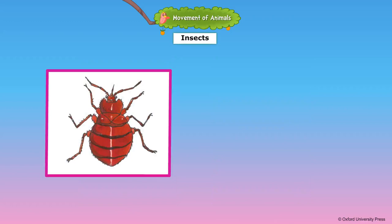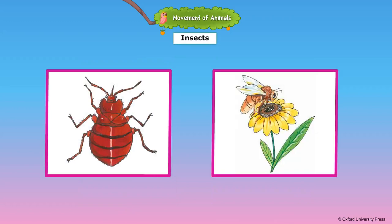Insects have legs for their movement. Insects such as bed bugs and lice have jointed legs and a pair of claws at the end of the legs. The claws help the insect to move on the surface. Such insects do not have wings.